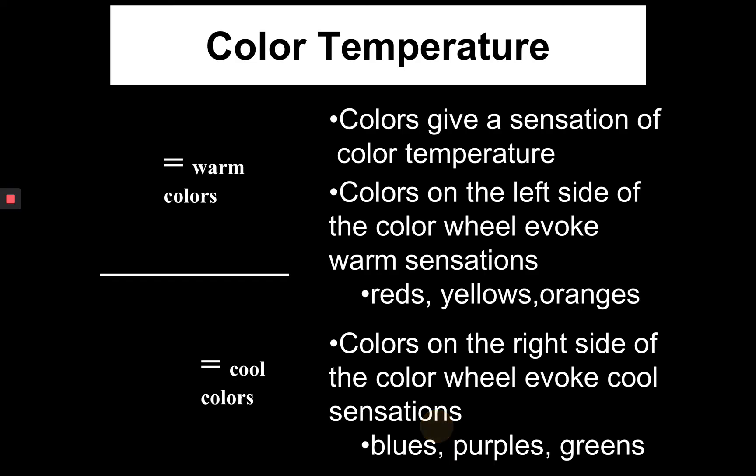Color temperature means how warm or cool the color is. Colors on the left side of the color wheel evoke a warm sensation — think fire: red, yellow, and orange. And then on the right side of the color wheel evoke a cool sensation: blue, purple, and green.